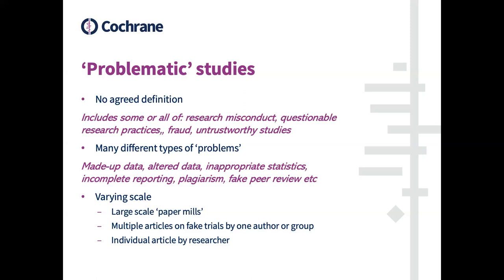Within that, there are many different types of problems: made-up data or fraud, altered data, inappropriate stats, incomplete reporting, plagiarism, et cetera. What we've seen over the last few years is increasing recognition of different types and scale of problematic studies. People are becoming aware of big paper mills producing completely fake studies, and we're also getting big fake data from randomised controlled trials.